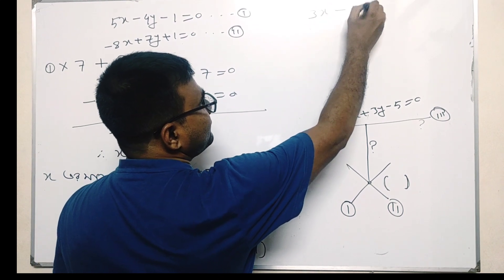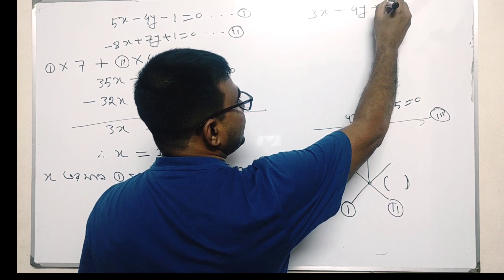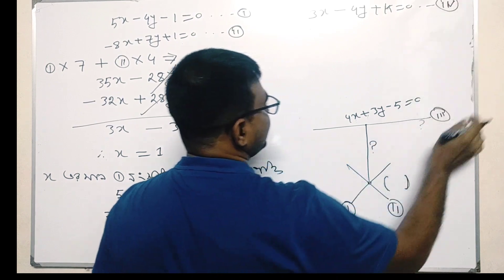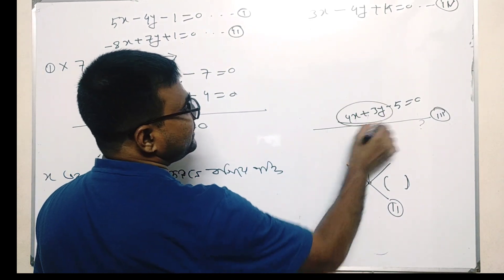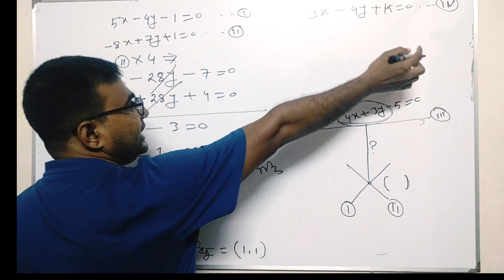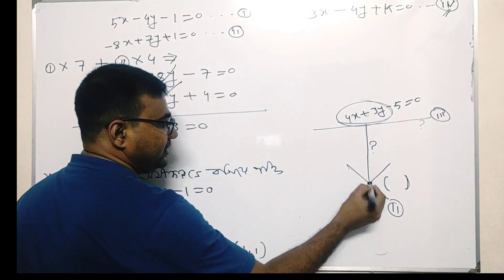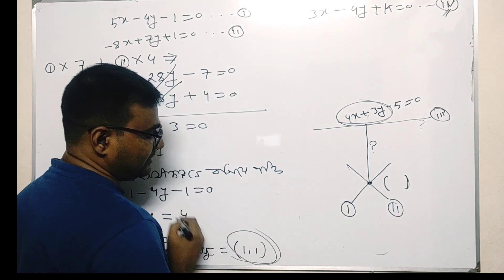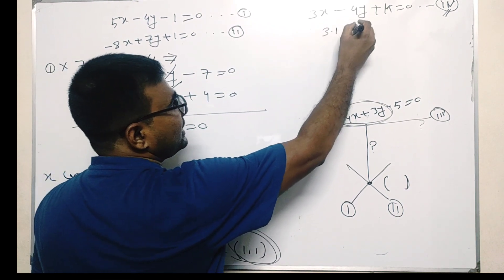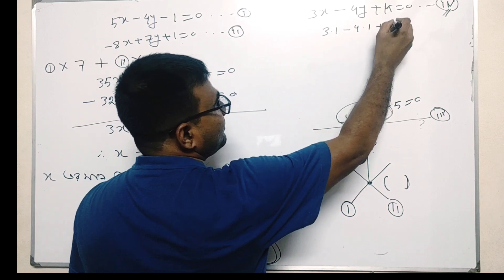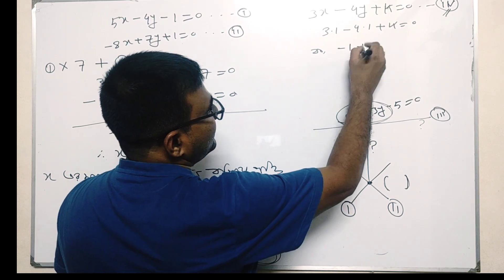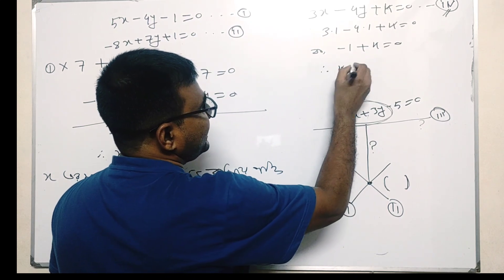Now for the line 3x - 4y + k = 0. We are going to get to the point (1, 1). The fact is, k is the same value. The numbers are the same — 2 numbers as a pair. So we drop x = 1 over here, plus k equals 0.